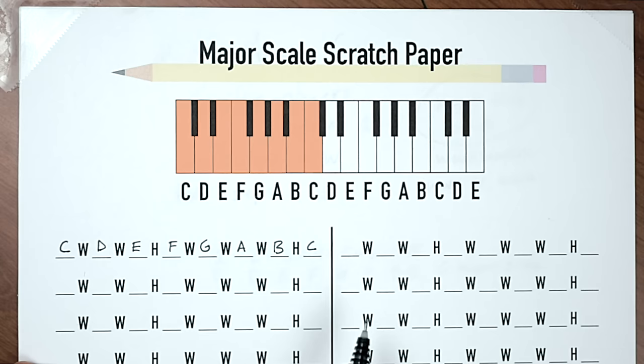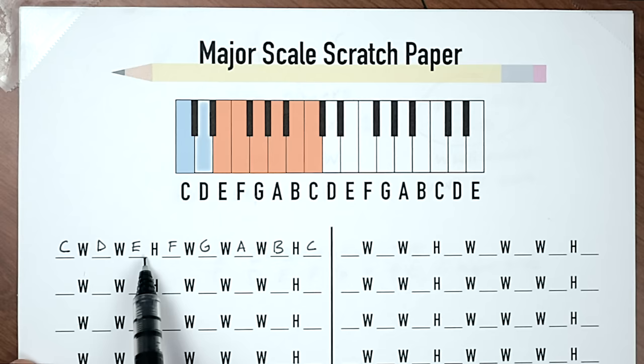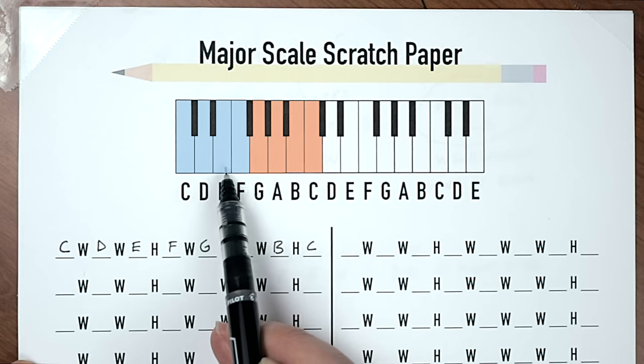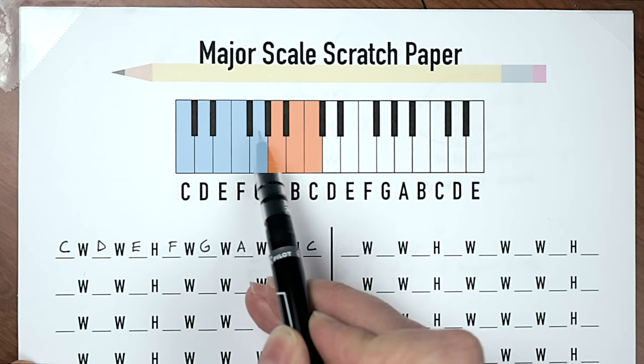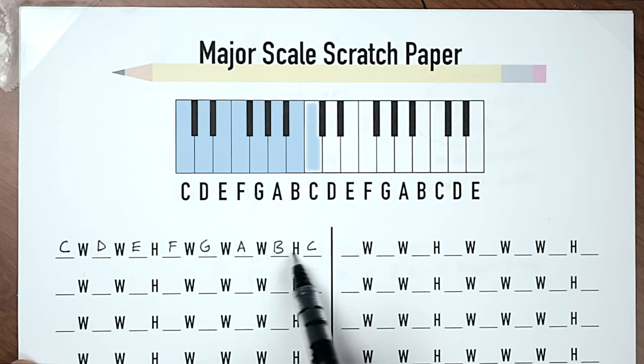Write in the alphabet starting on C, then verify. C to D: supposed to be a whole step — yes. D to E: whole step — yes. E to F: supposed to be a half step — yes. F to G: whole step, skipping F-sharp — yes. G to A: whole step — yes. A to B: whole step — yes. B to C: supposed to be a half step — and it is. So the C major scale checks out perfectly.